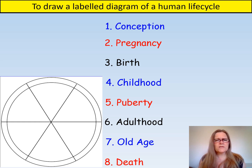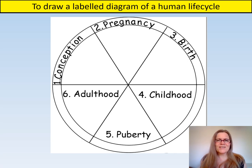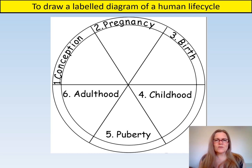Have you noticed the problem? Yes, there's only six sections but we've got eight headings. How can we solve this problem? That's right — we don't need to include old age and death in our life cycle because adults make babies. So the life cycle needs to start again after adulthood.